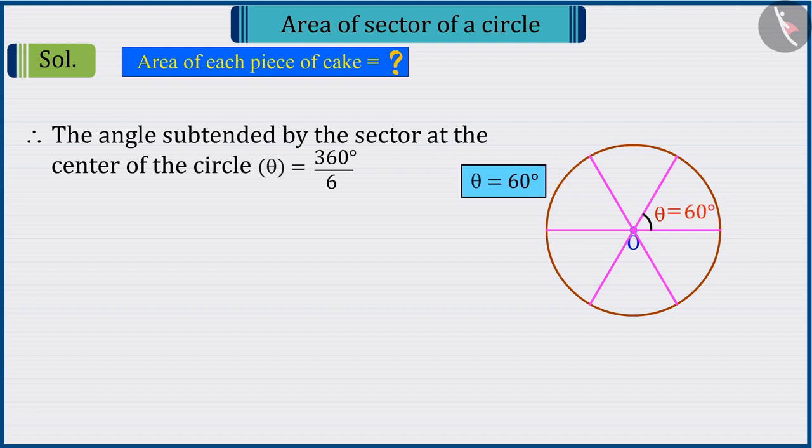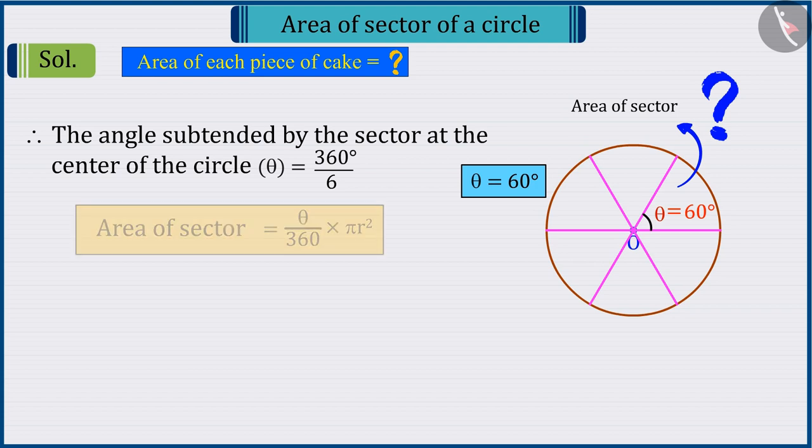So the angle subtended by each sector at the centre would be 60 degrees. Since we have to find the area of each piece of cake, i.e., the area of each sector, so for the area formula of the sector, we need the radius.